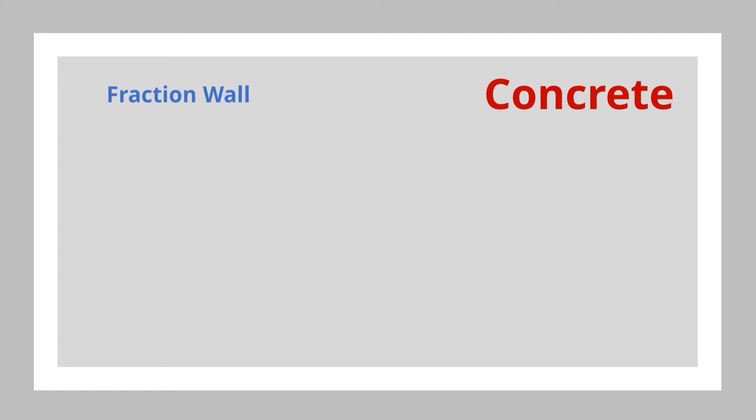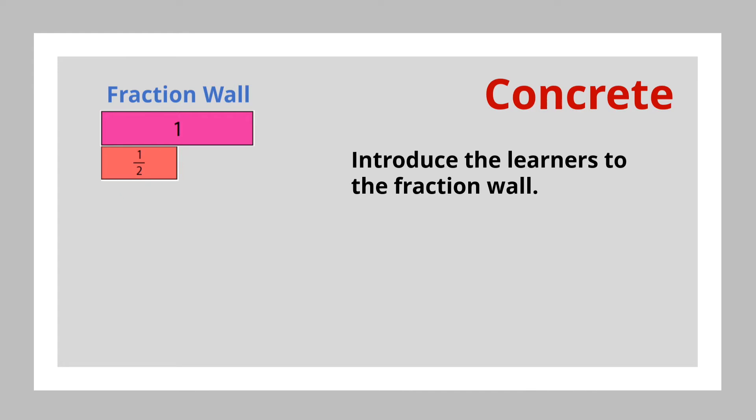After making this decision, we then introduce the learners to the fraction wall. This is done by describing what is a whole. The whole must be described in terms of its shape, its size, and its area. We then introduce other pieces of the whole, namely the fraction one-half. Then we describe what a half means in terms of the whole, and we can ask the students how many pieces of halves do you think will make a whole.